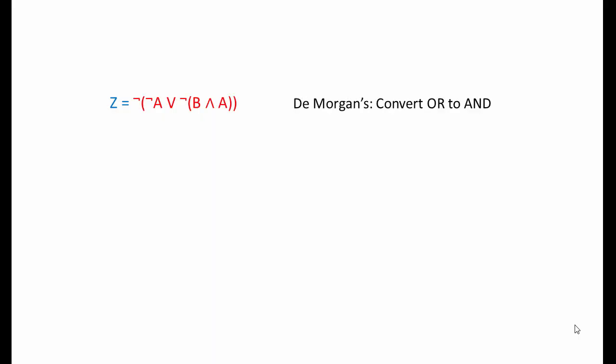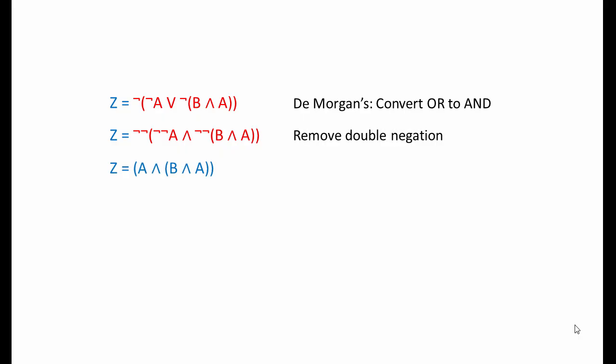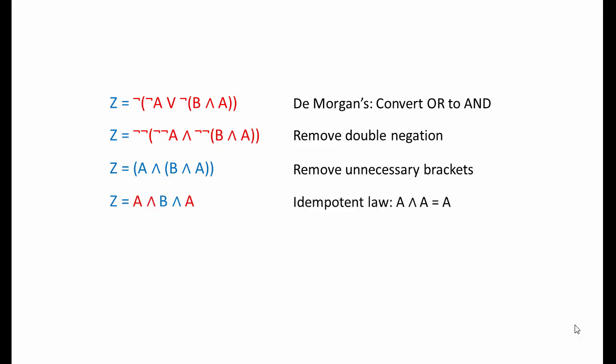Here's another example. This time we'll use De Morgan's theorem to convert the OR into an AND. It's going to affect the whole expression because the OR operator applies to the complete terms on either side of it. We've NOTted each term on either side of the operator that we've swapped, and we've NOTted the whole expression. Now we're going to remove any double negation, then remove any unnecessary brackets. The idempotent law allows us to reduce A AND A to simply A. Here's our simplified expression.